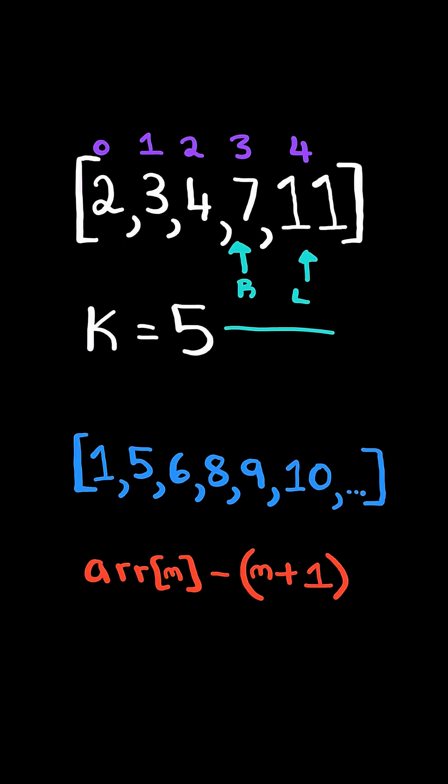Eventually, L and R will cross each other, and so we return left plus k. In this case, 4 plus 5 equals 9.